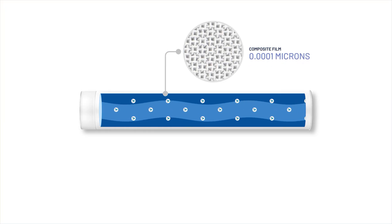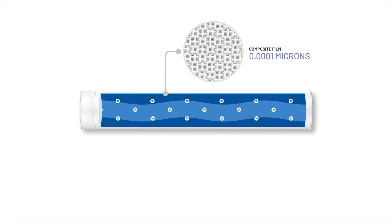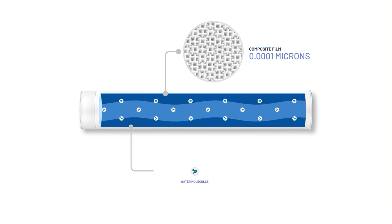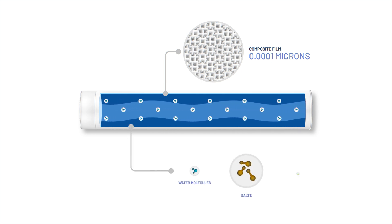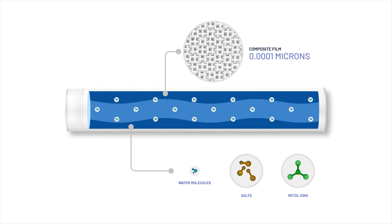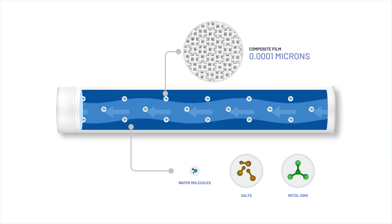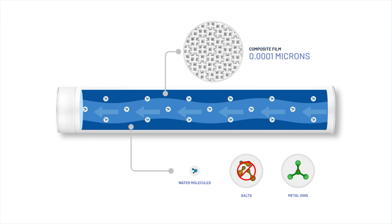The first key difference is the type of barrier or process used to separate contaminants from your water. A reverse osmosis system relies on a semi-permeable membrane consisting of super thin layers with incredibly tiny pores as small as 0.0001 microns — small enough to block even dissolved salts and metal ions. The pores are so small that only water molecules pass through while nearly everything else is rejected.